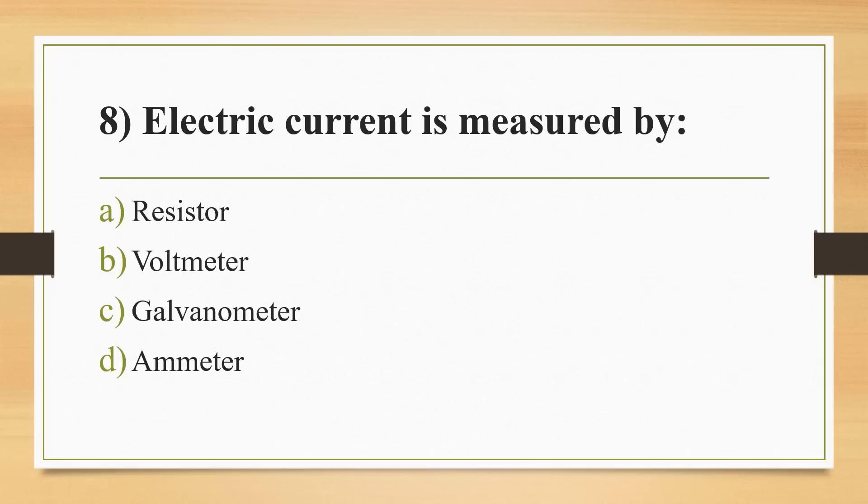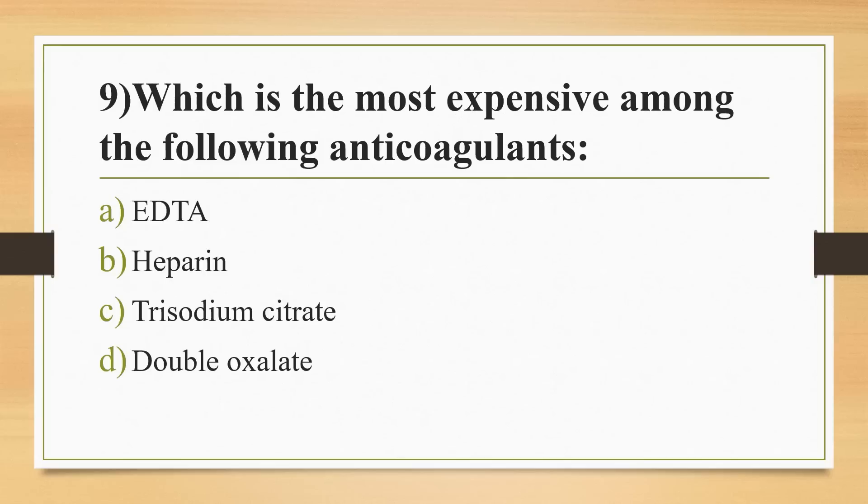Eighth question: electric current is measured by? Options: resistor, voltmeter, galvanometer, or ammeter. Answer is Option D, ammeter. Ninth question: which is the most expensive among the following anticoagulants? Options: EDTA, heparin, trisodium citrate, or double oxalate. Answer is Option B, heparin.